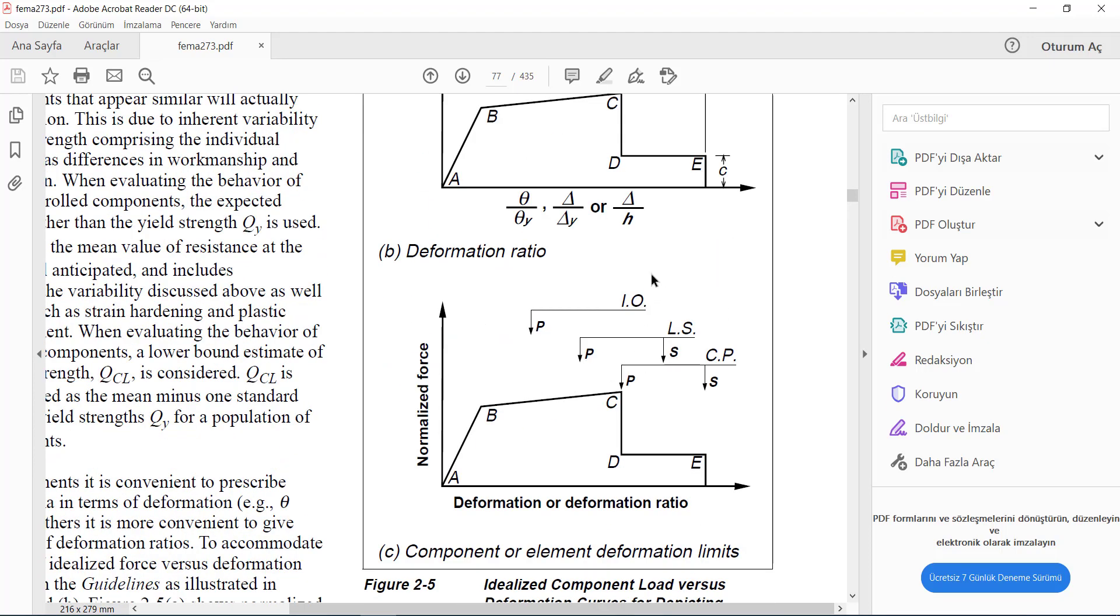As you can see here, this is the performance level. For example, we can see that immediate occupancy performance level is before life safety, and at the end we have here the collapse prevention and this is the failure point.